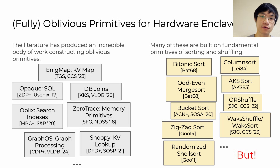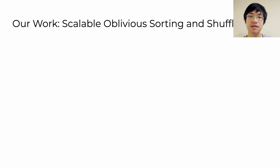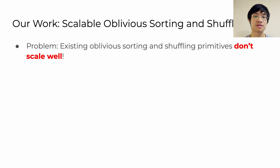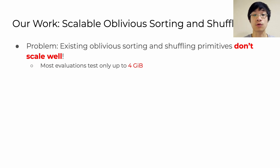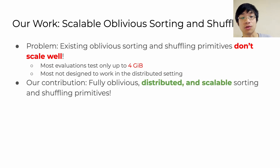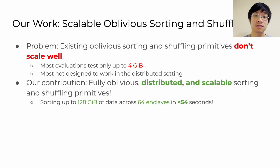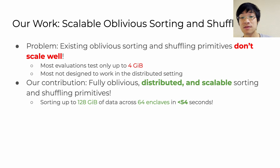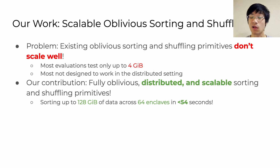But there's something that's missing so far from these building blocks in our literature, and that problem is one of scalability. Previously existing sorting and shuffling primitives simply don't scale well when you scale them up massively. Most of the solutions mentioned test only up to four gigabytes in their evaluations, and very few of them actually target the distributed setting directly. Our contribution directly addresses this hole in the literature. We provide fully oblivious distributed and scalable sorting and shuffling primitives, with evaluations testing sort sizes up to 128 gigabytes in the distributed environment with up to 64 enclaves — the largest distributed evaluation of oblivious sorting to our knowledge — and it achieves all of this in less than a minute.